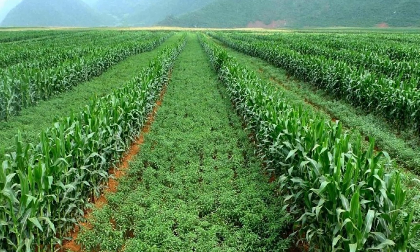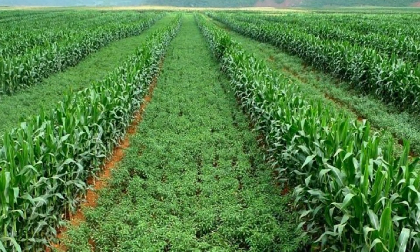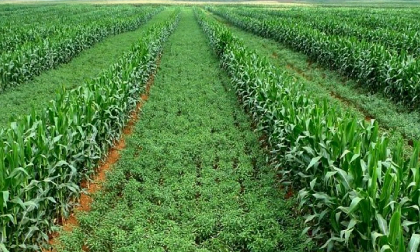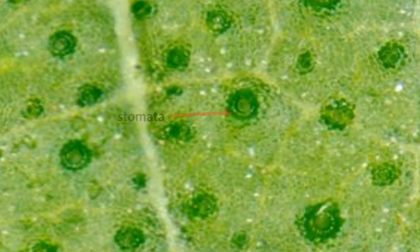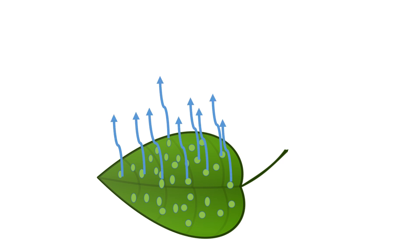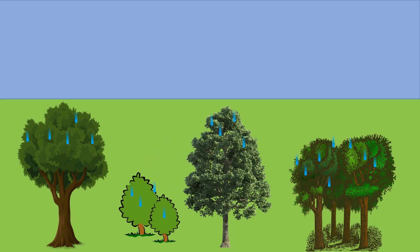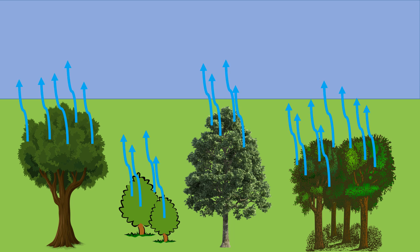Even plants and trees have a cooling effect on the atmosphere, leading to rainfall. Plants' leaves have small holes known as stomata. Through the stomata, the plants release extra water in the form of water vapor. This process is called transpiration. The water vapor from the plants rises to the atmosphere and condensation takes place to form clouds.